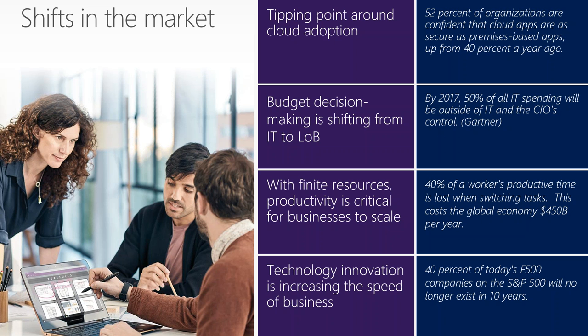We also see more decisions coming from the line of business rather than the IT side. These department leaders are really driving decisions, especially for productivity and meeting the demands of the processes they own. As Gartner says on the slide here, by 2017, almost 50% of all IT spending will be outside the control of the IT department. That is an interesting shift and has really come true as we have conversations with both prospects and clients.